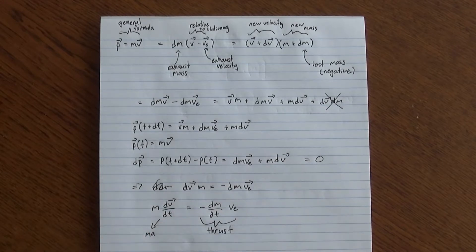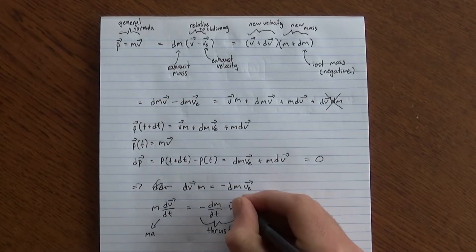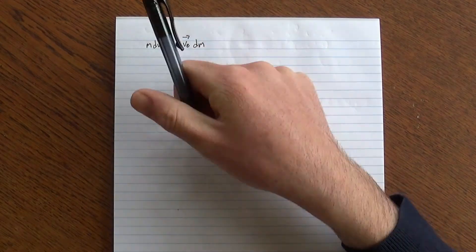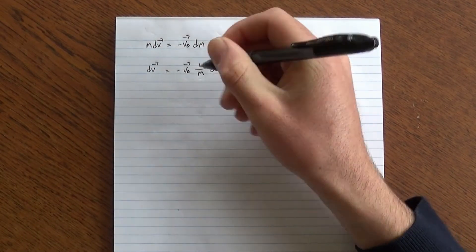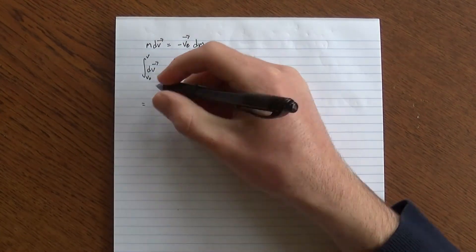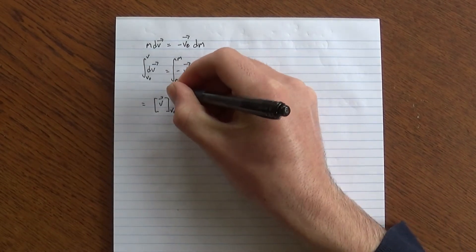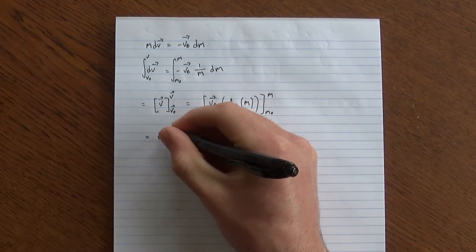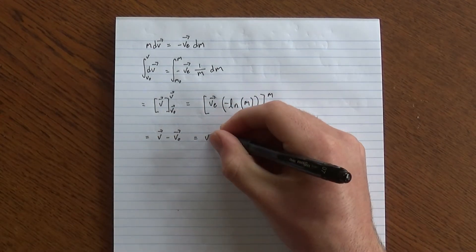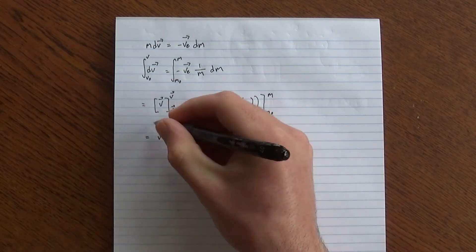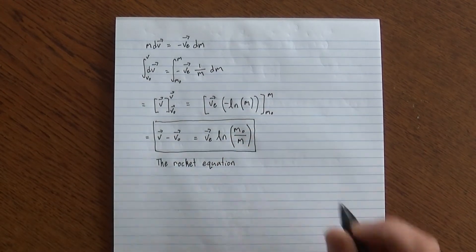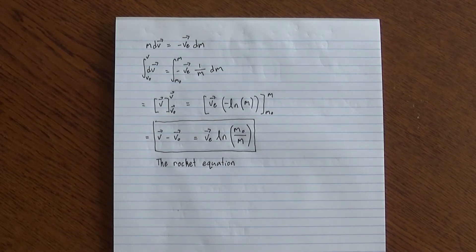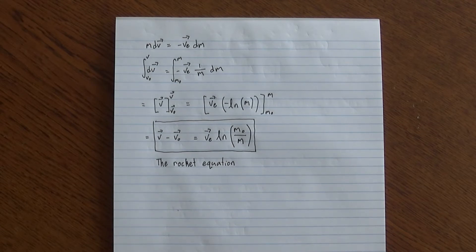Note that thrust is actually positive, because dm is negative. Going back to the equation m·dv equals negative dm·ve, we can solve this differential equation to get v minus v0 equals ve times the natural log of m0 over m. V0 is the initial velocity of the rocket, and m0 is its initial mass, including both fuel and payload. This is the rocket equation, and what makes rocketry so difficult.